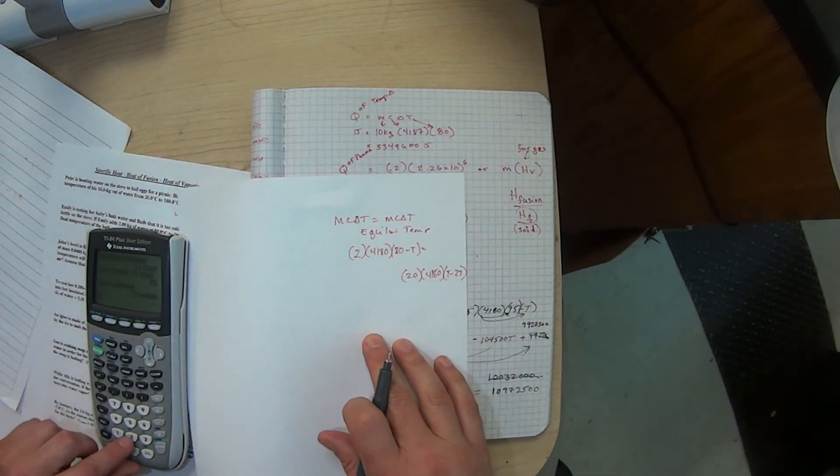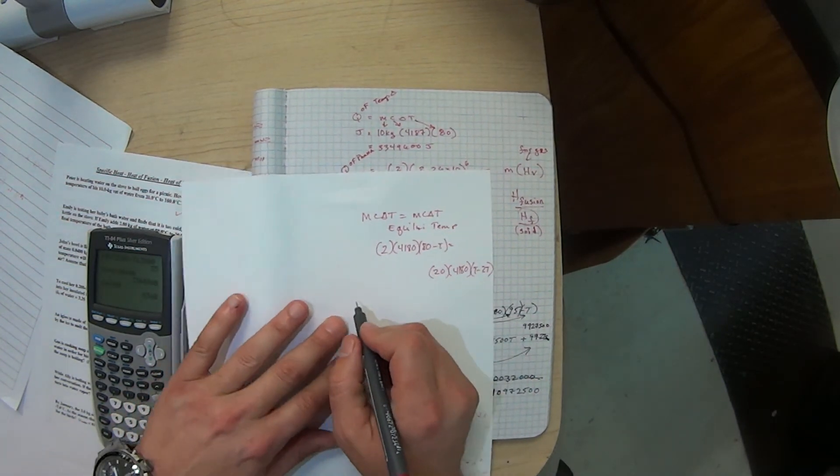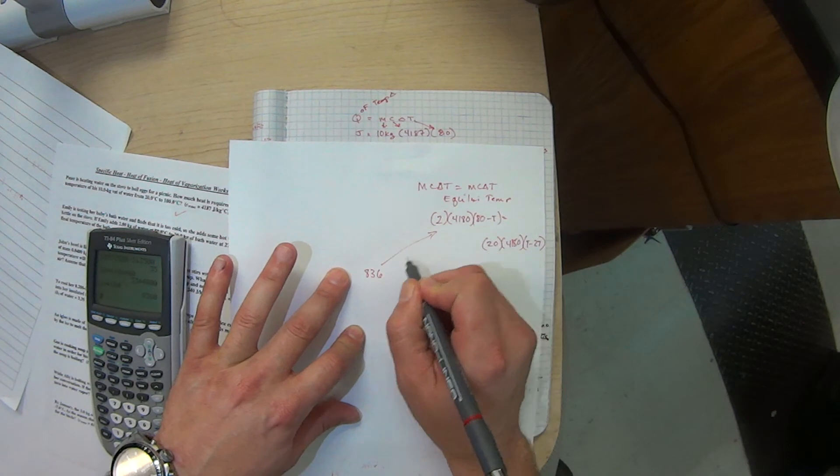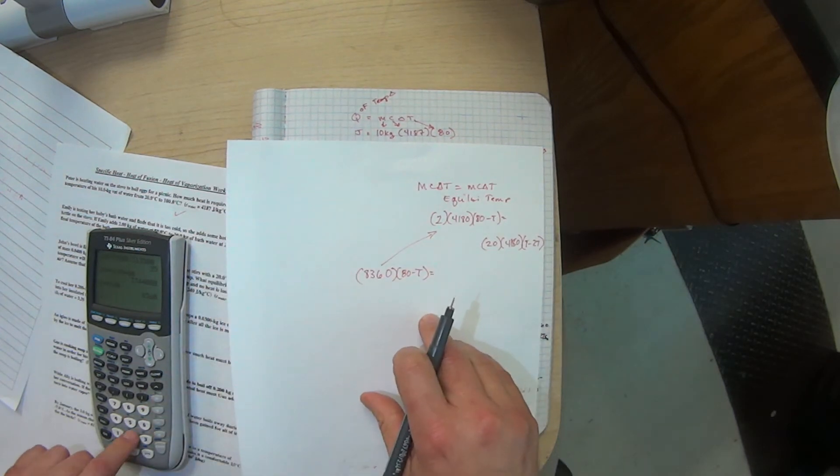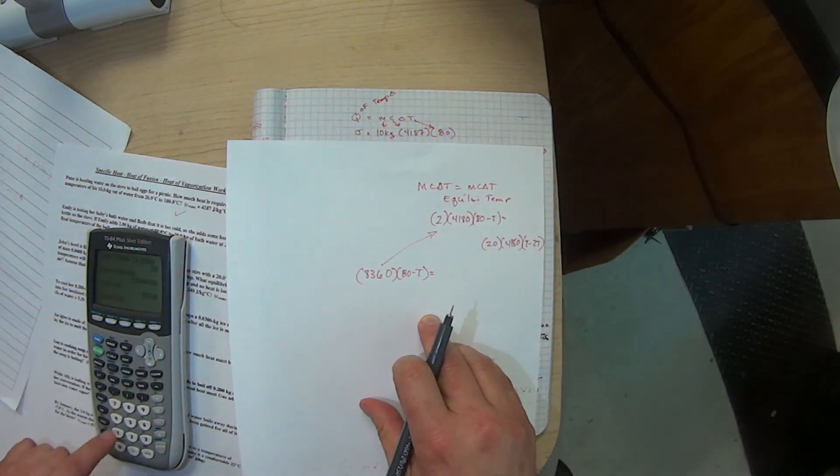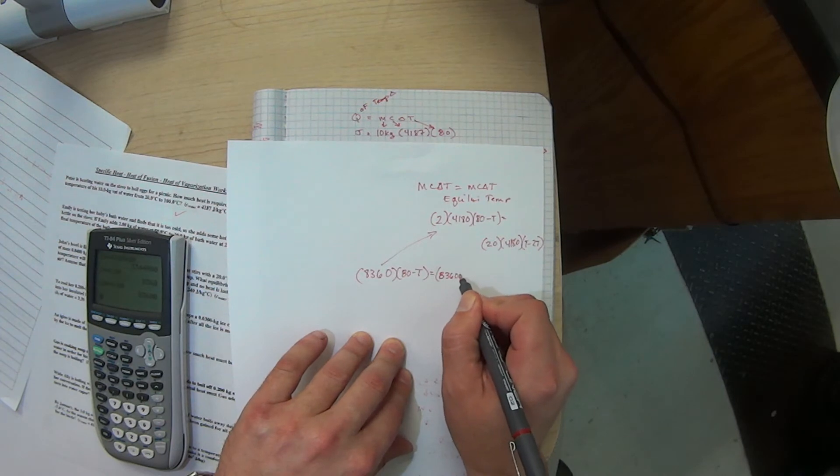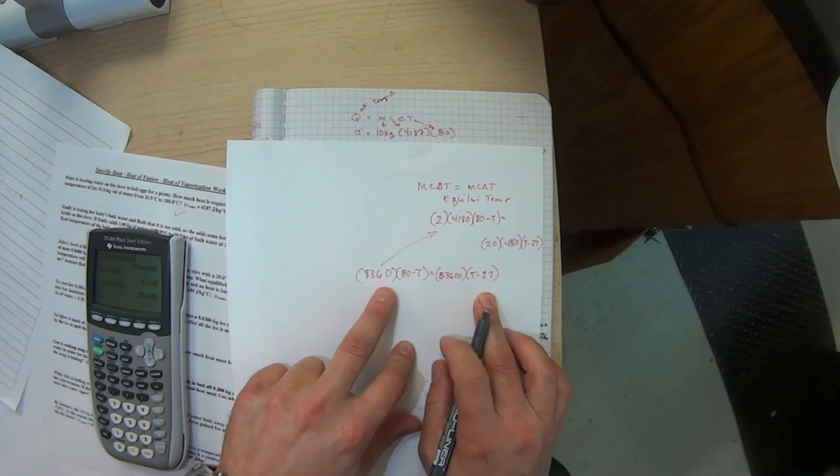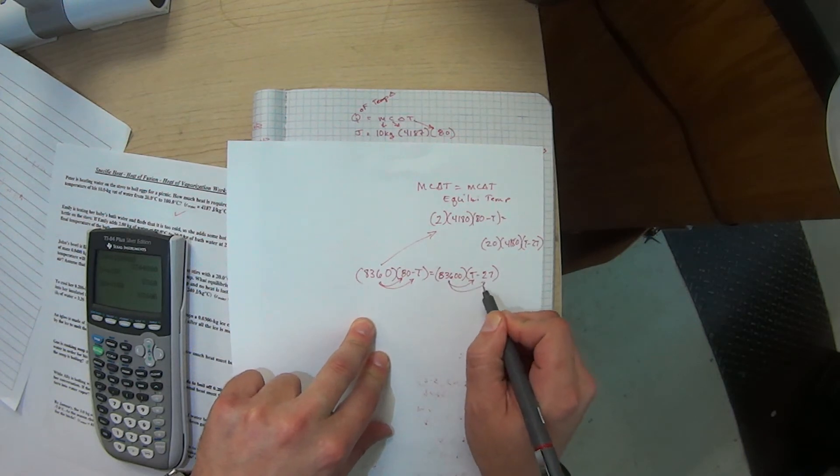It's 20 kilograms times the water, and it's going to be the cold number last with the equilibrium first. Now what I do is I go ahead and multiply those numbers together. So I'm going to have 2 times 4180, and when I clean all this up it's going to be 8360. That came from those two numbers, and then 80 minus T is equal to...